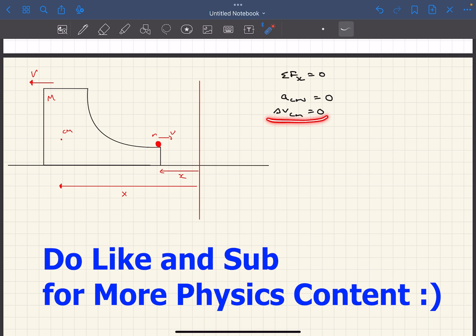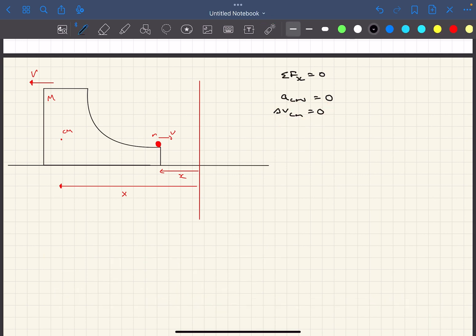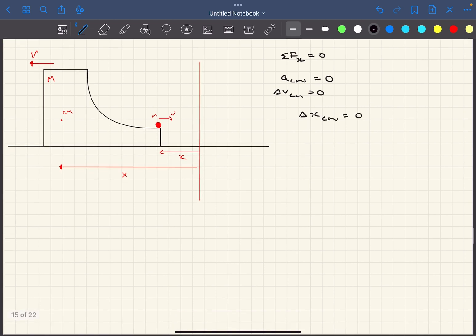Because delta v is 0, it basically means that the center of mass will not change its position. Or we can say delta x of the center of mass is 0. And this is what we'll be using in this question. Delta xcm is basically M1 delta x1 plus M2 delta x2 divided by M1 plus M2 and this is equal to 0. Where delta x1 is the displacement of mass 1 and delta x2 is the displacement of mass 2.